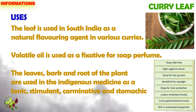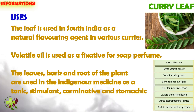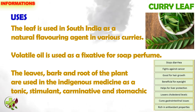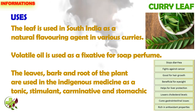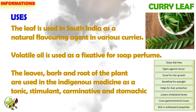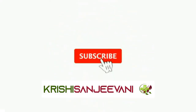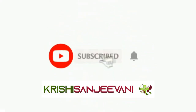Stem cuttings can also be used for propagation. The leaf is used in South India as a natural flavoring agent in various curries. The volatile oil is used as a fixative for soap and perfume. The leaves, bark, and root of the plant are used in indigenous medicine as a tonic, stimulant, carminative, and stomachic.